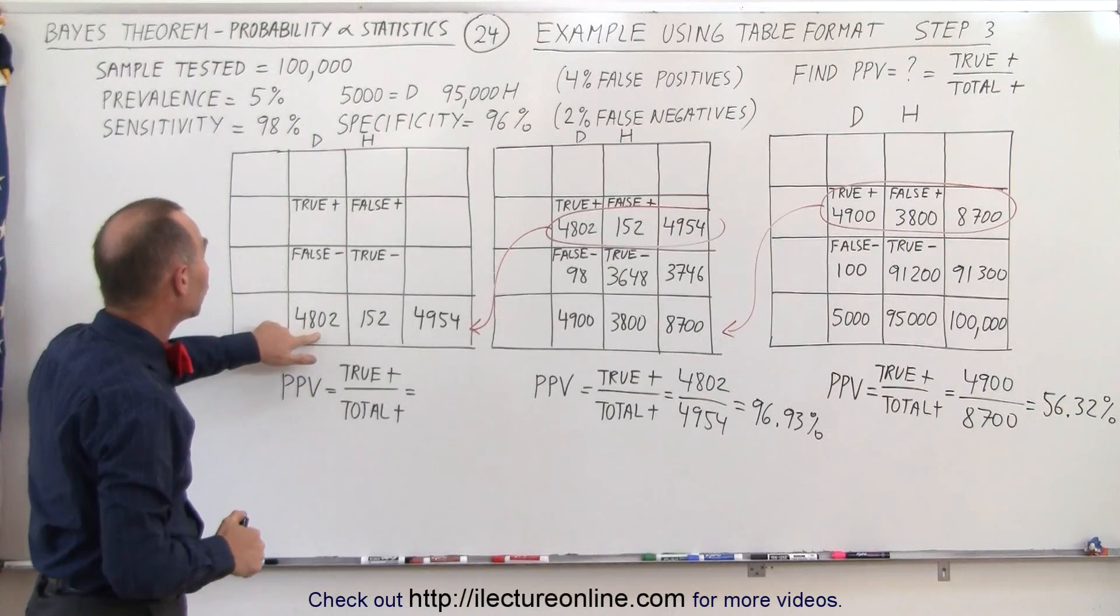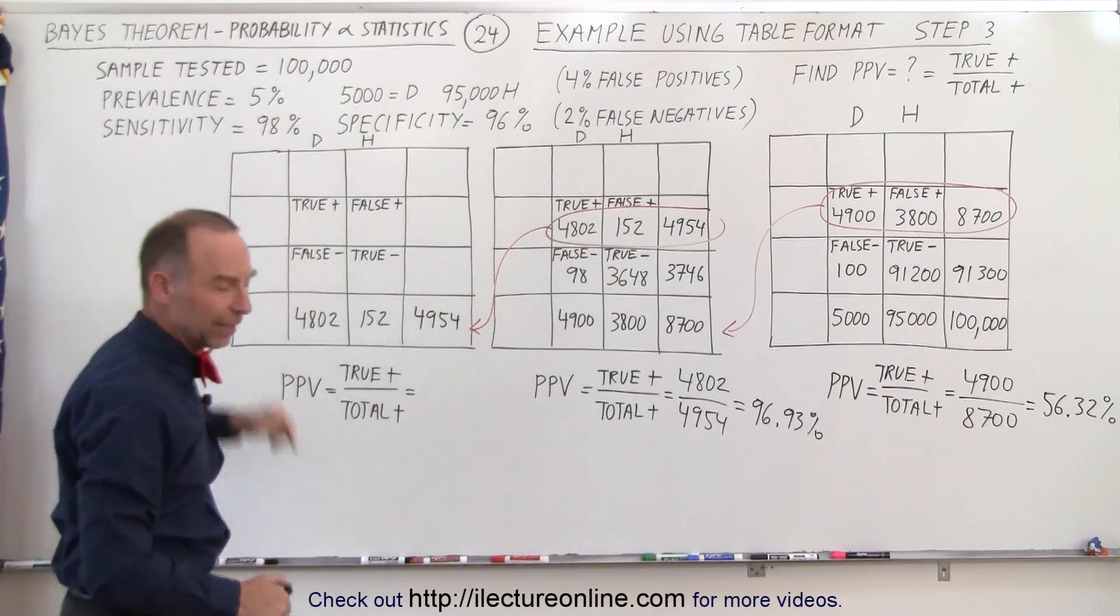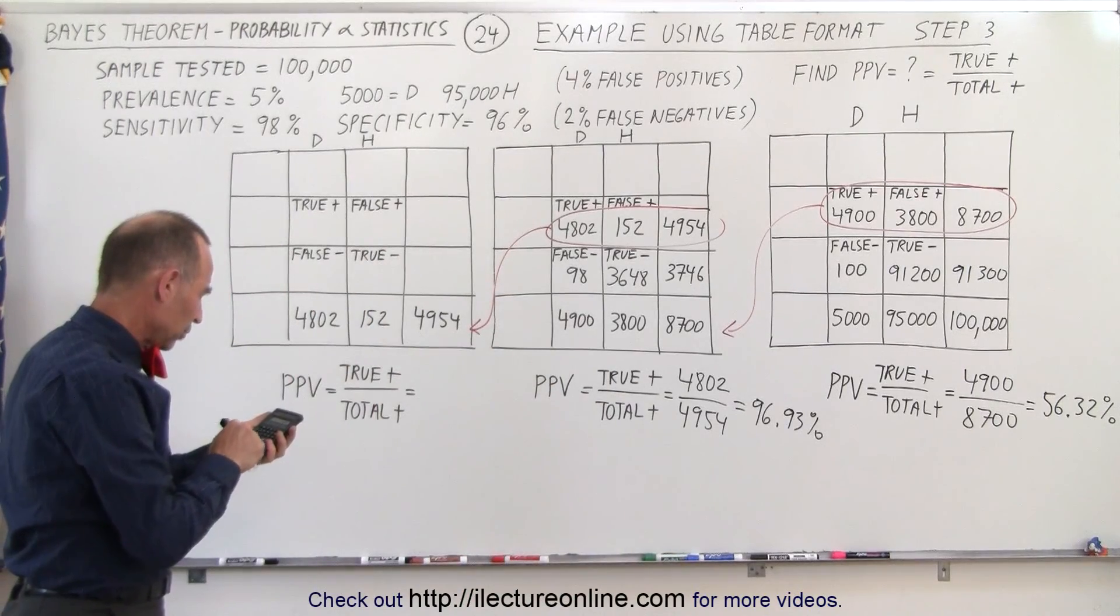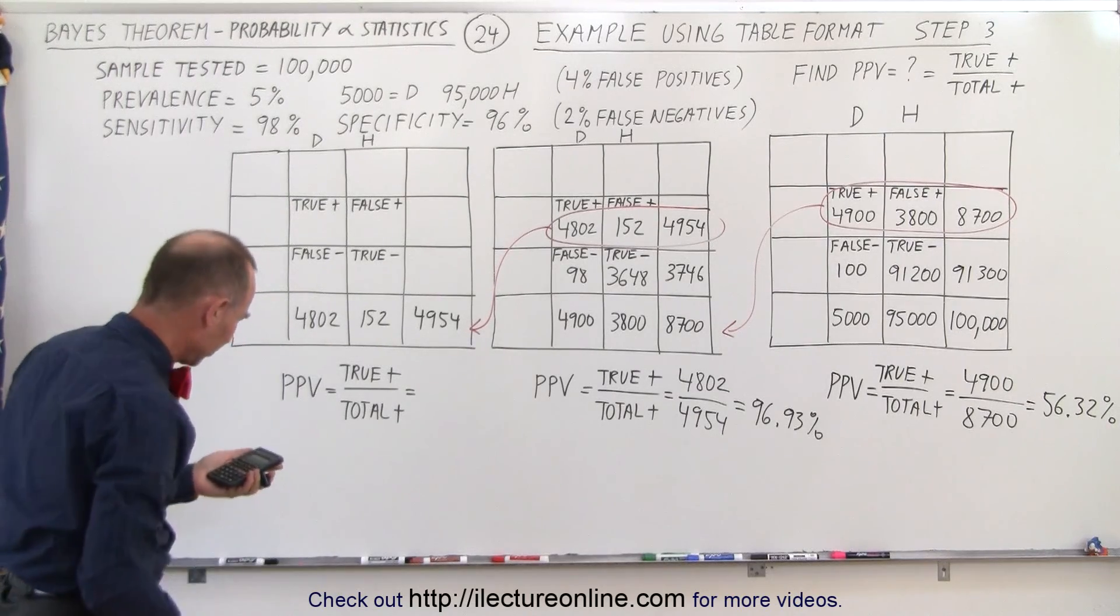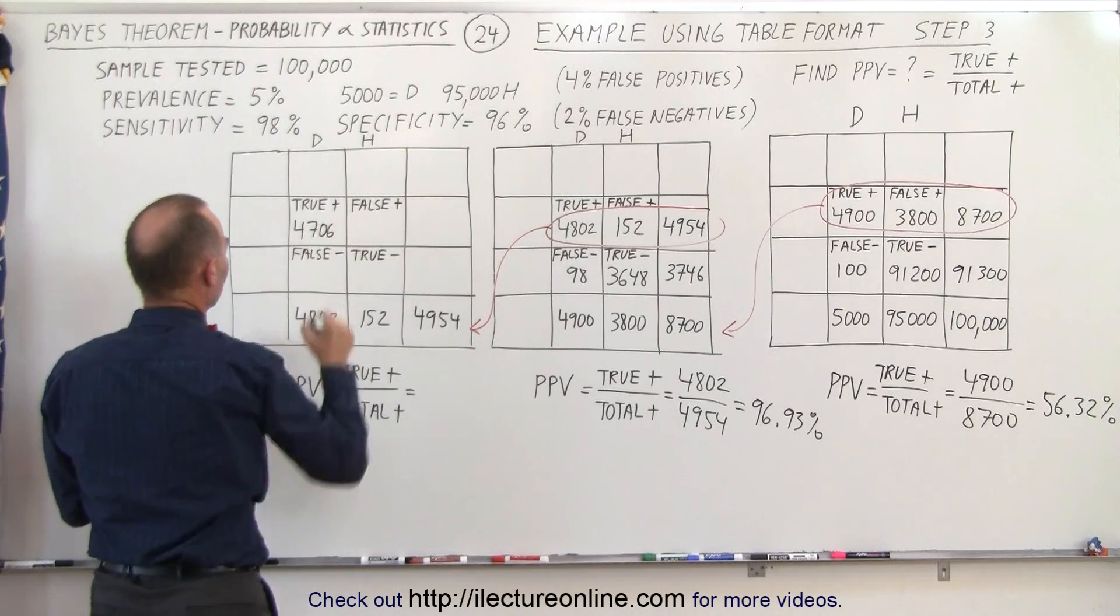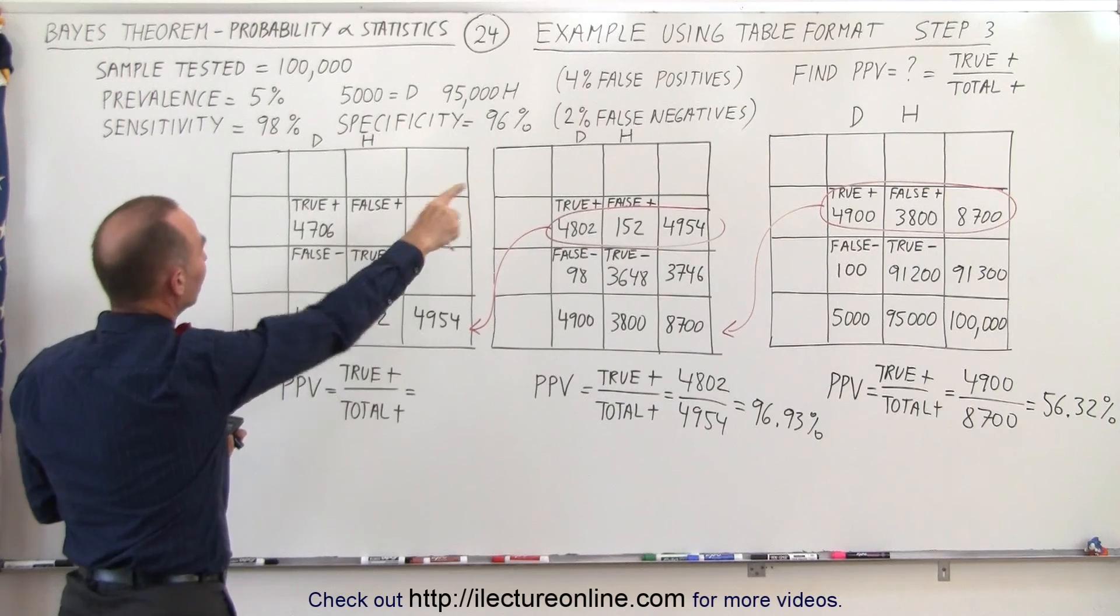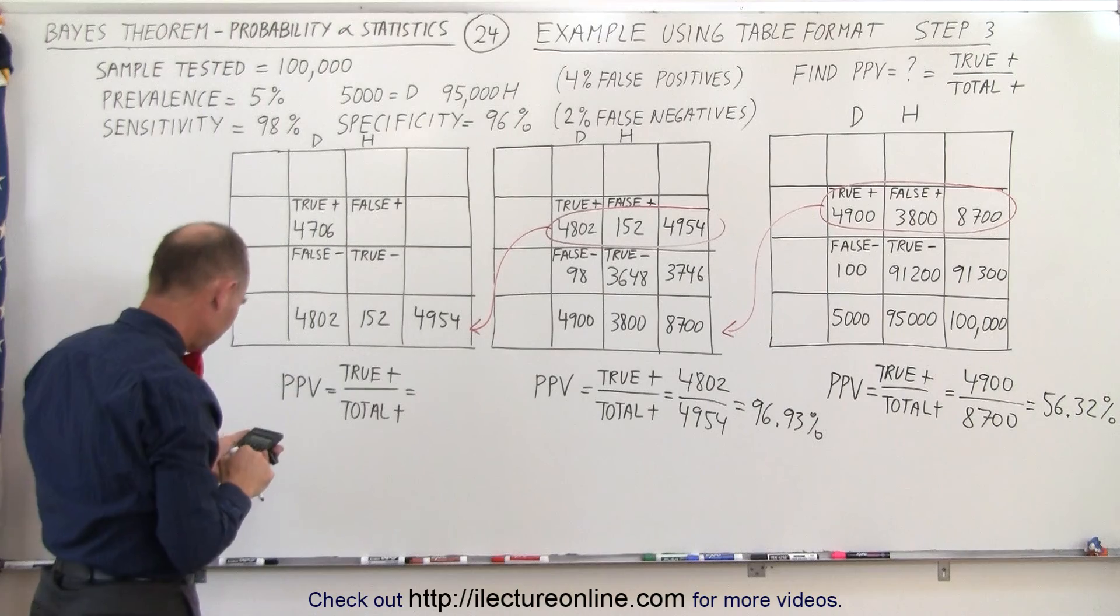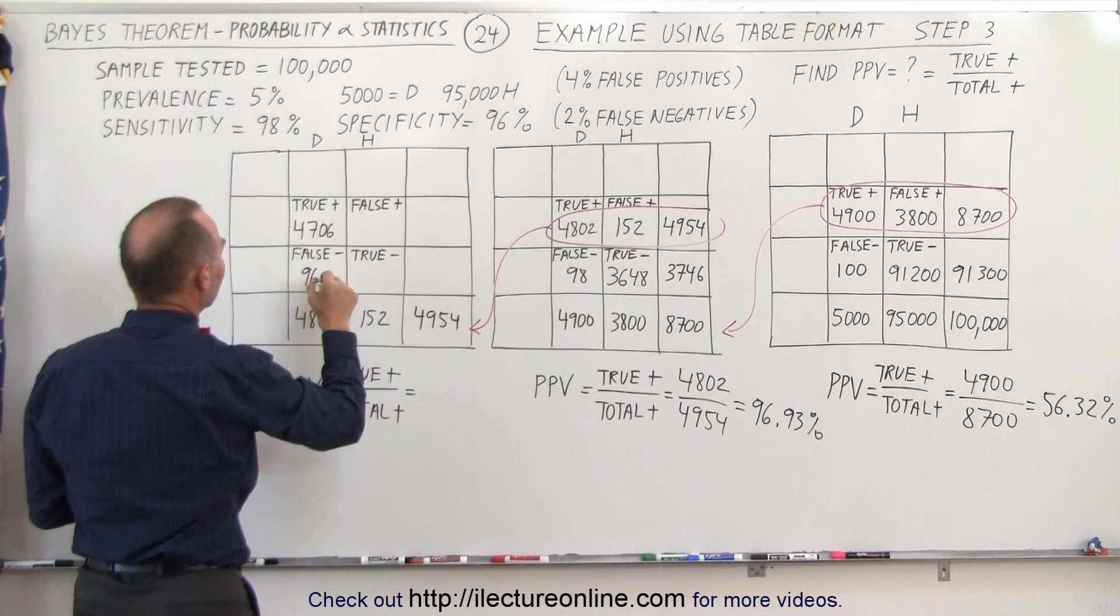Of the 4,802 that have the disease, 98% of them will test positive again. So let's go ahead and do that. 4,802 times 0.98 equals 4,706. We'll round it off to the nearest integer. So we have 4,706, and then 2% will be false negatives. So we have 4,802 times 0.02 which equals 96. So 96 will have false negatives.